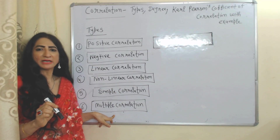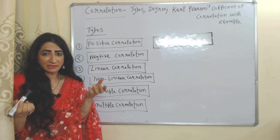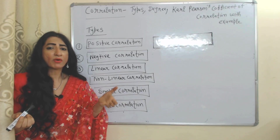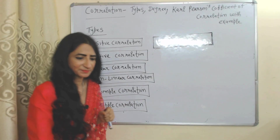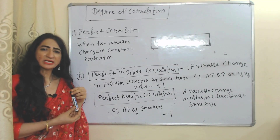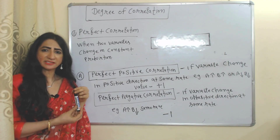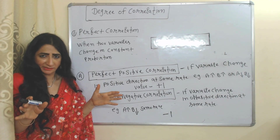In case of simple correlation, only two variables are involved. But in case of multiple correlation, we simultaneously analyze more than two variables. Now the degree of correlation — correlation just shows that there is some relationship between two variables.